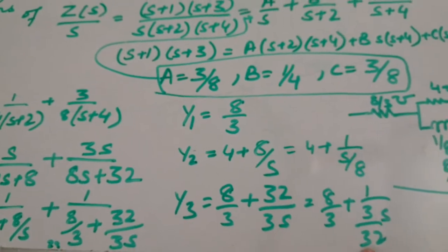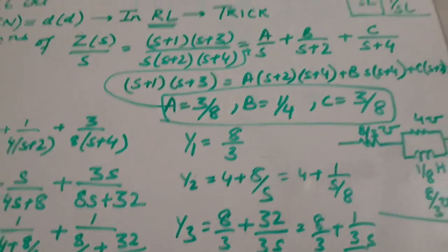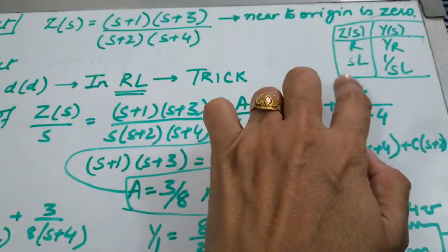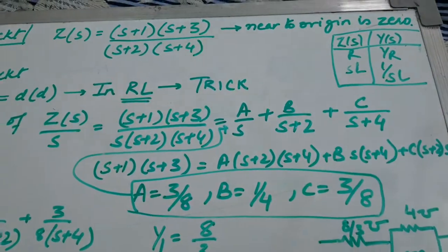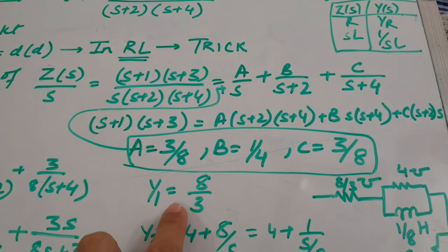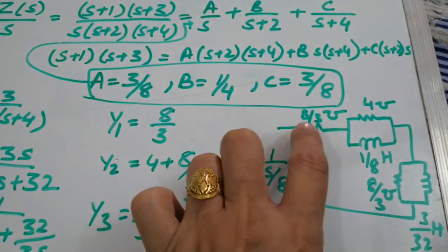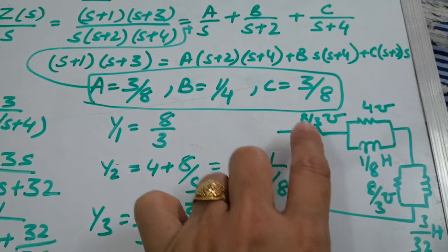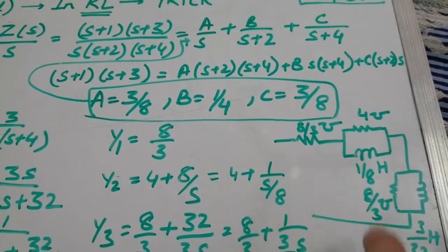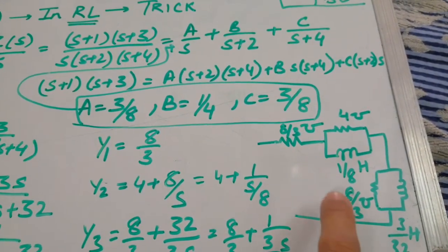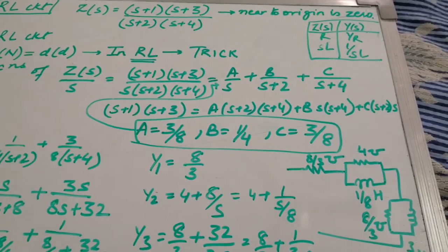Similarly, Y3 can be written as 1 upon (3/32 · s) plus its resistive term. Since this is an RL circuit, I have only tabulated the values of R and L here. In the Y term, the resistance term is basically the conductance in mhos. After drawing the circuit, Y1 gives 8/3 mhos, which is also equal to 3/8 ohms. Similarly, 4 mhos or 1/4 ohms, and 3/8 ohms or 8/3 mhos. This is our Foster 1 form for the RL circuit.